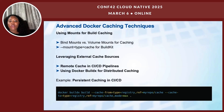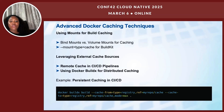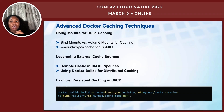Now let's cover advanced caching techniques. One powerful way to speed things up is by using mounts for caching. Bind mounts or volume mounts can help persist dependencies across builds and reduce redundant installation. You can add the mount with type=cache using BuildKit. This allows Docker to cache intermediate builds without creating unnecessary layers and helps improve performance.